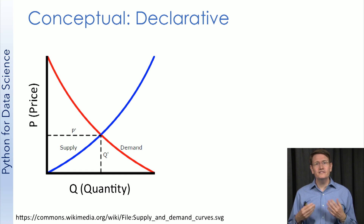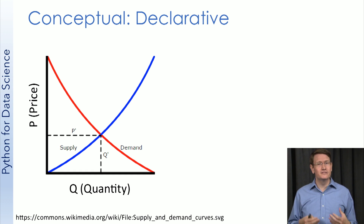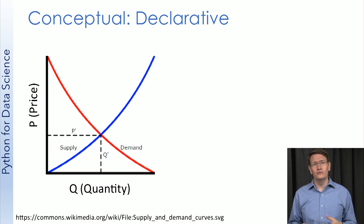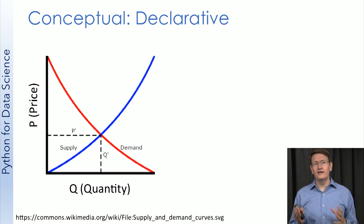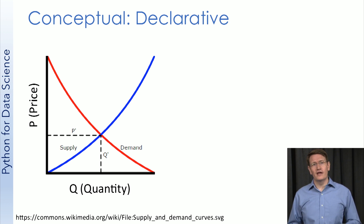So this is the classic supply-demand curve from economics that I just mentioned. It explains the relationship between supply, or the quantity of goods available, with demand, or the amount someone is willing to pay for the item. When quantity is low, demand is high. As quantity goes up, demand will decline. This is conceptual, and these lines are hypothetical. But since much of our work is going to be data-driven, let's focus on that for now.